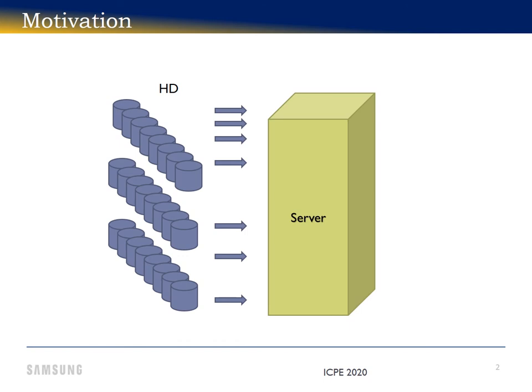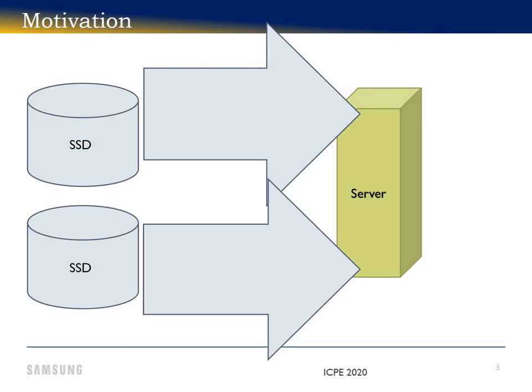Twenty years ago, IO was the bottleneck for big data analytics, and that bottleneck was mitigated by attaching many hard disks to each server. With the advent of flash storage, the bottleneck has shifted. Today, servers can no longer keep up with the flow, and the SSD bandwidth goes unused.